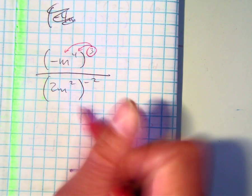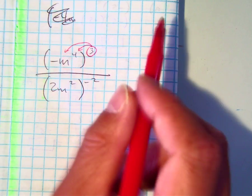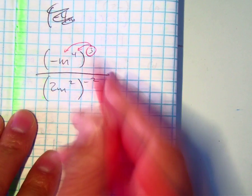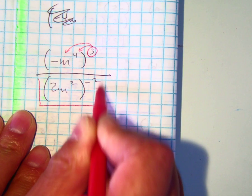But I'm not going to do that for the bottom. The reason why is that this is the base and this is the exponent. It's a negative exponent, so I'd rather just bring this whole thing up.